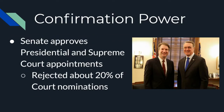Next is confirmation power — the process where the Senate can approve presidential and Supreme Court appointments. Supreme Court appointments are often under scrutiny; overall, Congress has rejected about 20% of them. The president who nominates a Supreme Court member must then go back and nominate someone else and re-go through the process if rejected. This gives Congress some control over who enters the judicial branch.